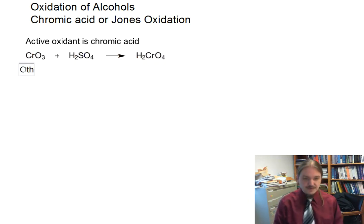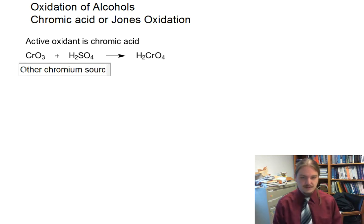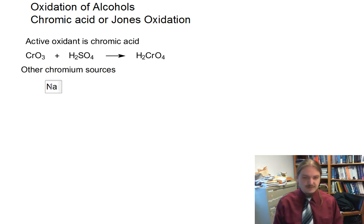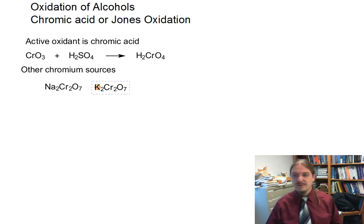Other chromium sources can include sodium dichromate, Na2Cr2O7, or the potassium salt, potassium dichromate, and all of these things react with sulfuric acid, usually an aqueous solution, though there are some organic solvents that will work to form chromic acid, which is the active oxidizing agent.